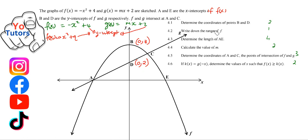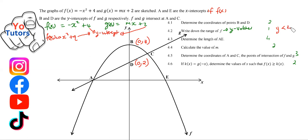The next question asks us to write down the range of f. The range is the set of y-values occupied by the graph of f. The graph of f is this parabola, and any y-value below 4 can be reached, but anything above 4 cannot. So the range is y ≤ 4, starting from 4 and going down.